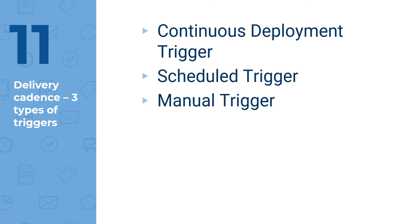Once you do that, every time a build completes, your release pipeline triggers and a new release will be created. Schedule trigger: this allows a time-based schedule to start a new release. For example, every night at 3 a.m., or at 12 p.m. You can have one or multiple schedules per day, but it will always run at the specific time.